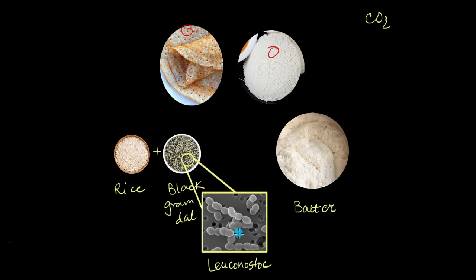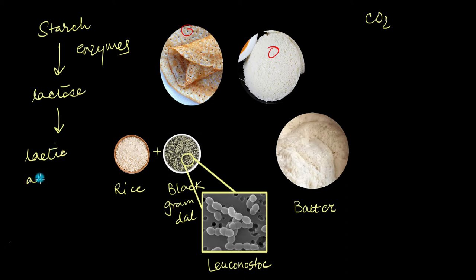Leuconostoc will break down all of the starch which is present in this batter into lactose with the help of its huge arsenal of enzymes. So we go from starch to lactose. Once Leuconostoc has the lactose, it's going to convert this lactose into lactic acid. And along with this lactic acid, it's going to produce ethanol or alcohol and CO2, carbon dioxide.